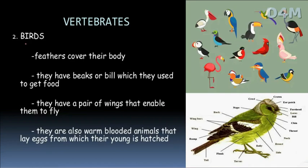The next vertebrate group is birds. Birds have a backbone. They have peculiar characteristics: they have feathers as body coverings, they have beaks, and they have wings. These are warm-blooded animals. They lay eggs.